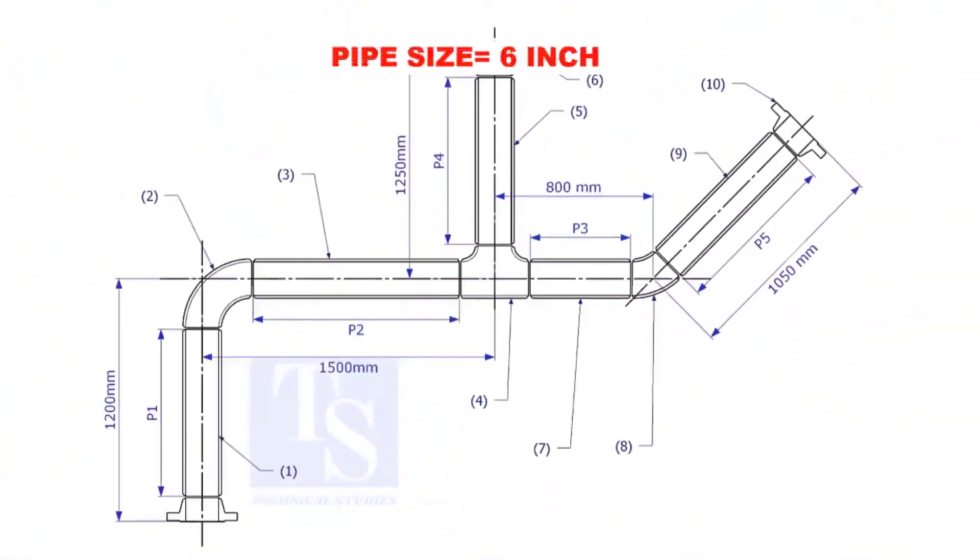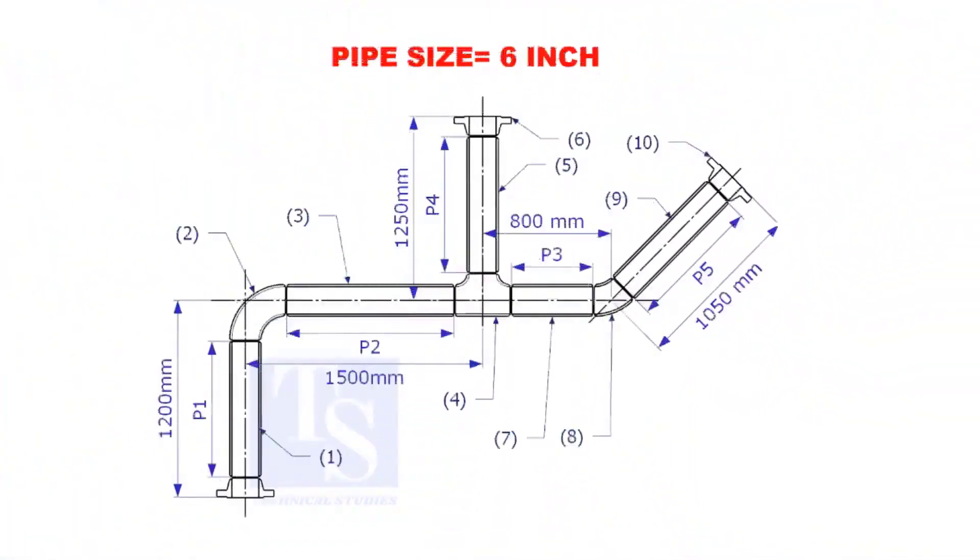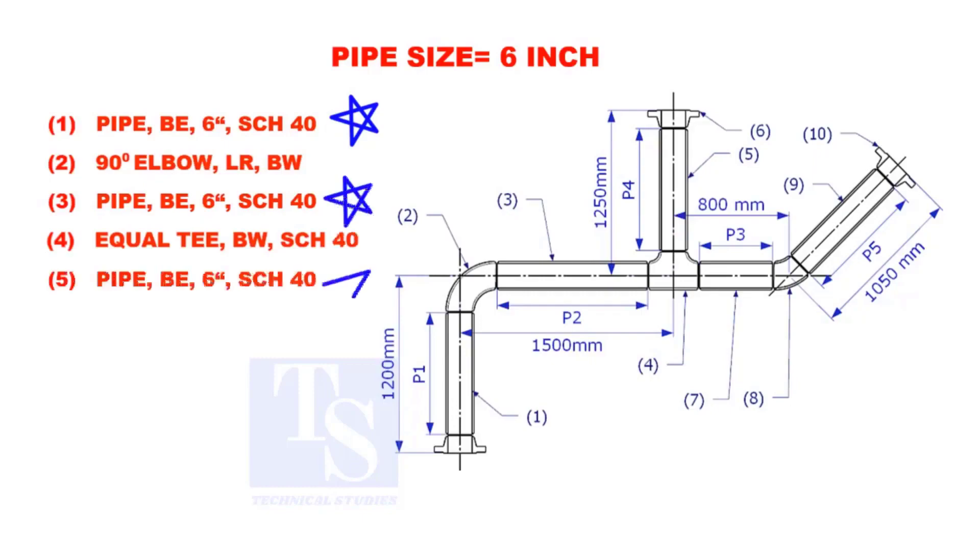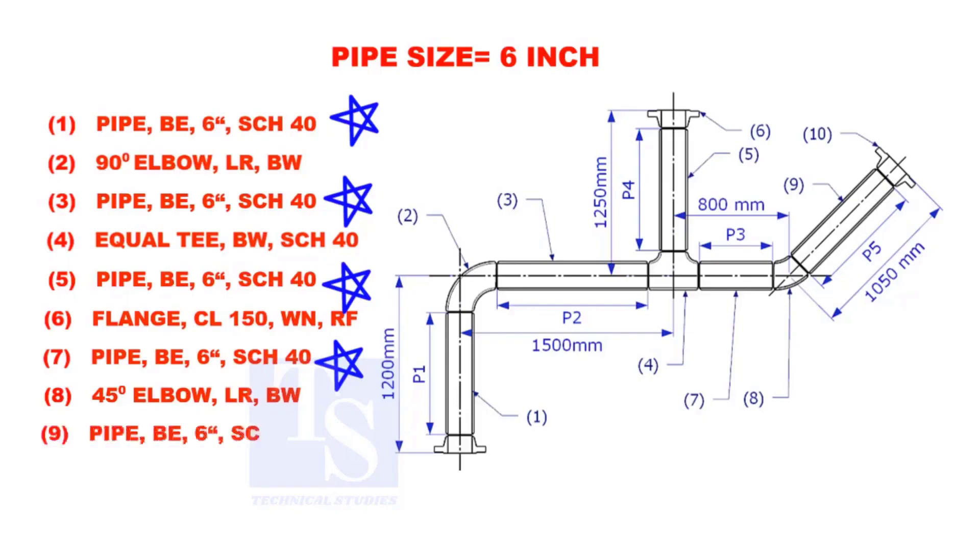Assume that the pipe size is 6 inches. Item numbers 1, 3, 5, 7, and 9 are pipes.